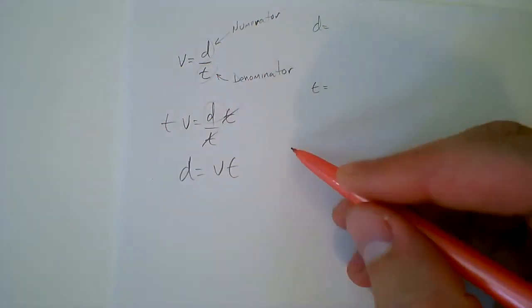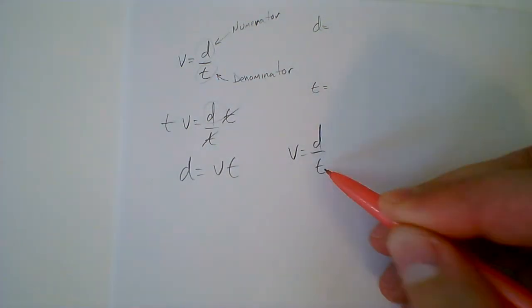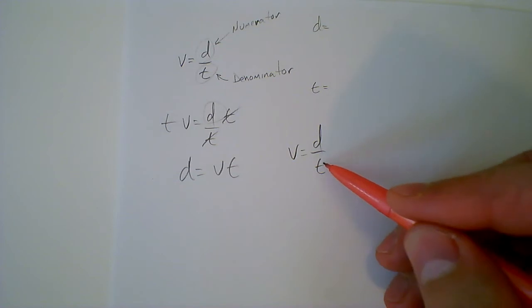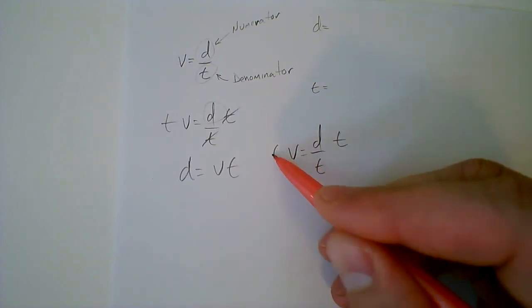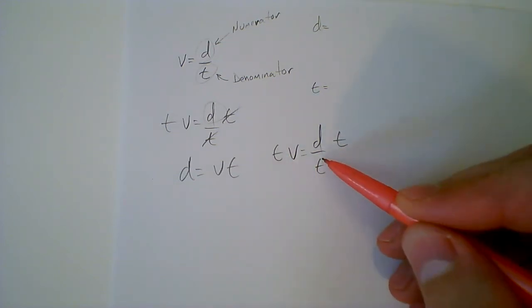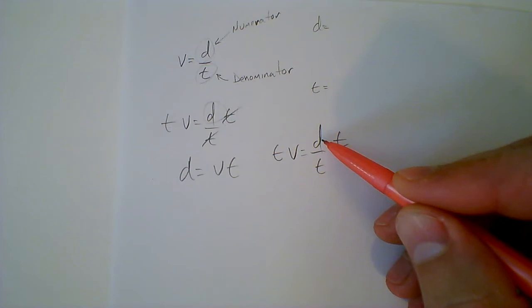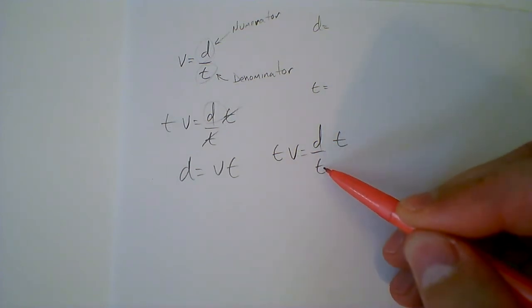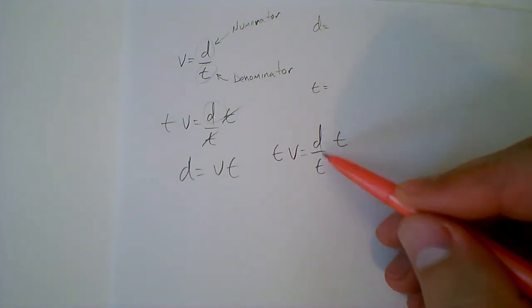To solve for the denominator, v equals d over t, to solve for t, we actually have to multiply both sides by t. The reason for this is that if I just got rid of d and tried to isolate t this way, I would have the inverse of t, not t.